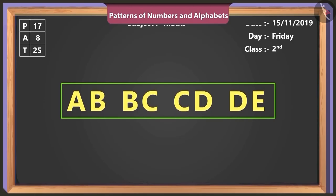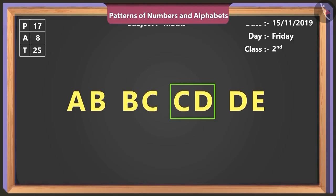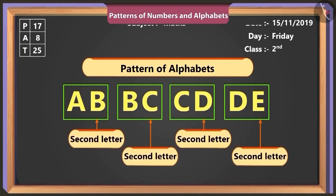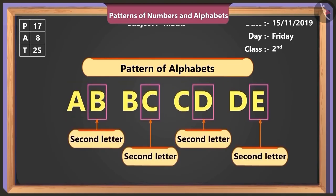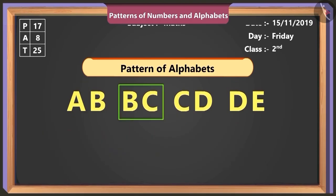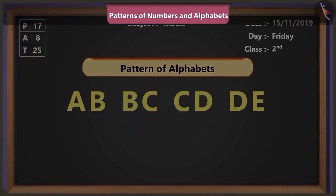A, B, B, C, C, D, D, E. Hmm, here each term is of two alphabets. The second alphabet of the first term becomes the first alphabet of the second term. And the pattern is getting built further. Very good, Binny.